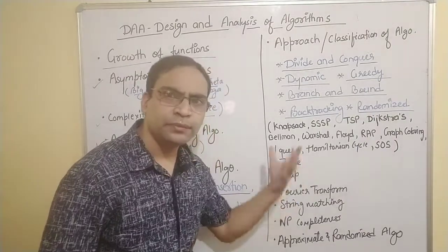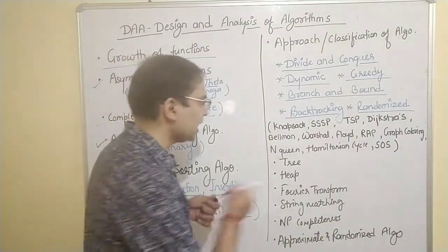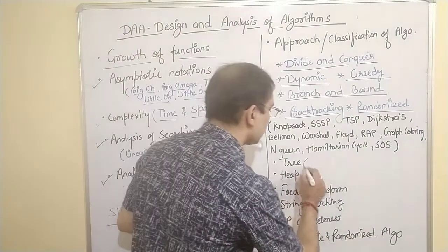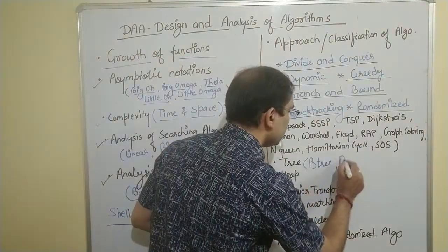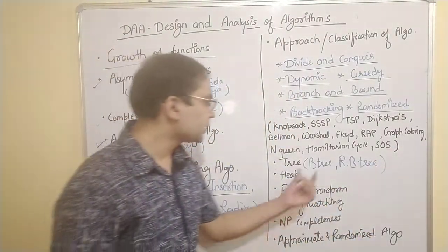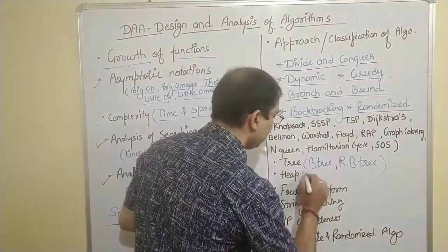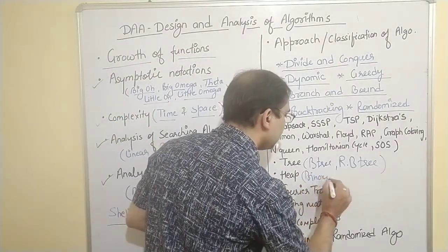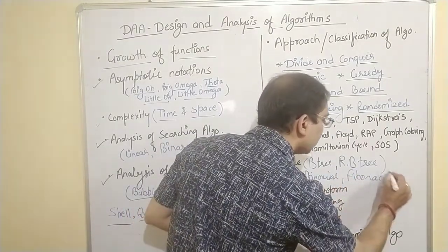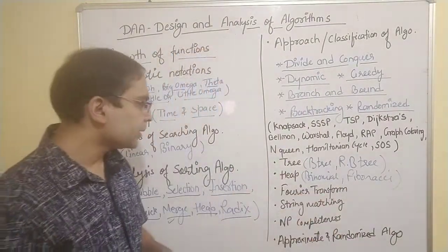There are also a few data structures we need to study and analyze. In the trees category, we will study the B-tree and the Red-Black tree. We will also study heaps, including the binomial heap and the Fibonacci heap. These are the two heap types we will be studying and analyzing in detail in this course.